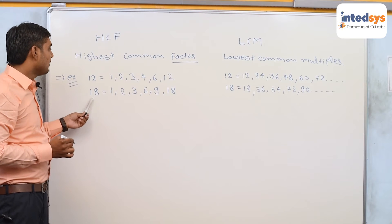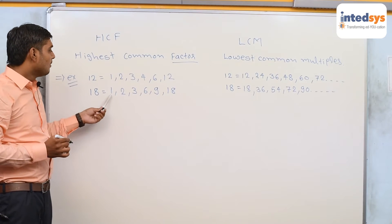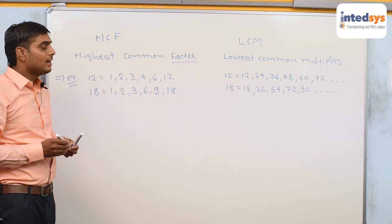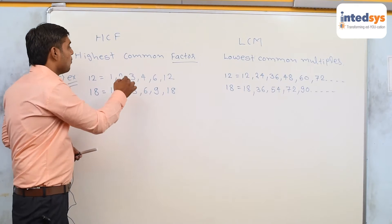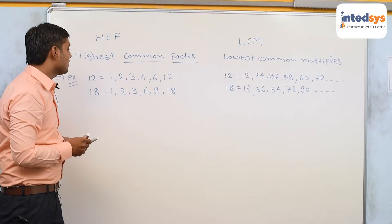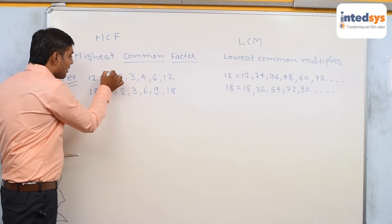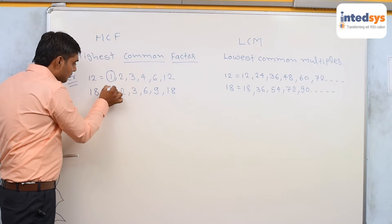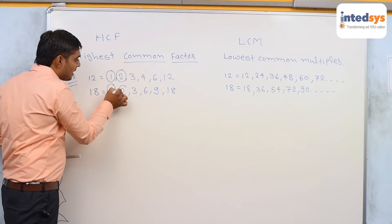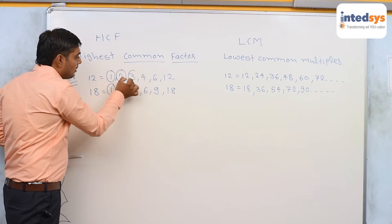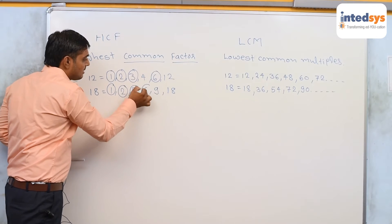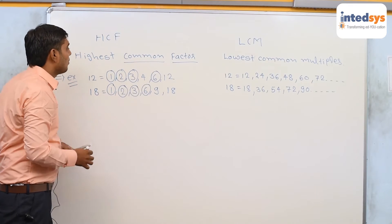And the factors of 18 are 1, 2, 3, 6, 9 and 18. Now, common factors — common factors means the numbers same in both cases — 1, 2, 3 and 6.